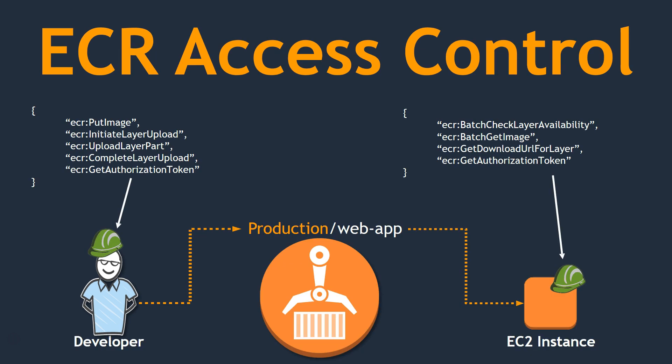Looking deeper into the access control mechanism: on the left-hand side you have a developer who is going to push images. The policy for that person will include put image privileges, initiate layer upload — where a particular layer is defined by the latest version of committed code — modify a particular layer, and get an authorization token for pushing, pulling, or removing those layers. Whereas the instance running the image will have only a limited set of privileges. You can completely isolate what privileges a developer has versus what an EC2 machine or other teams have — very fine-grained access control is possible with ECR.